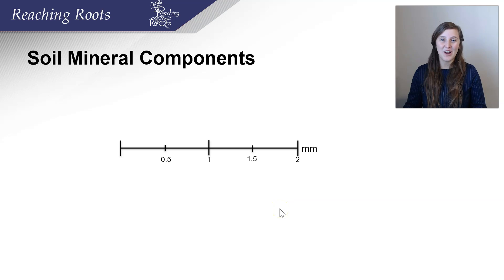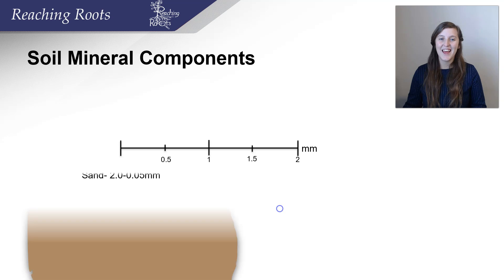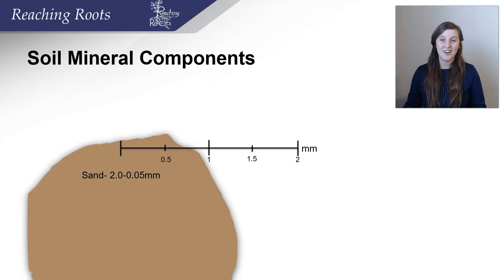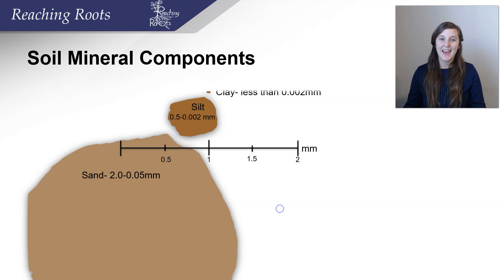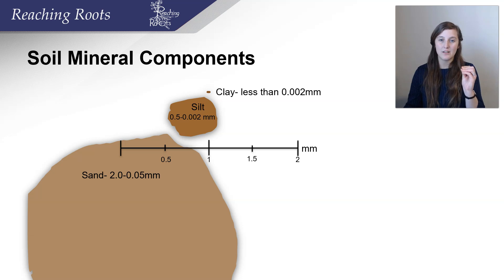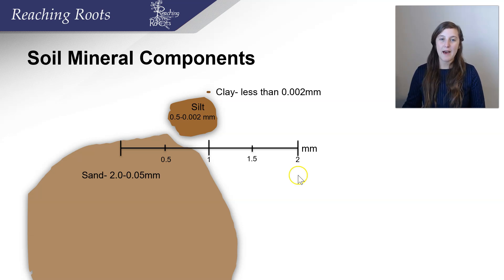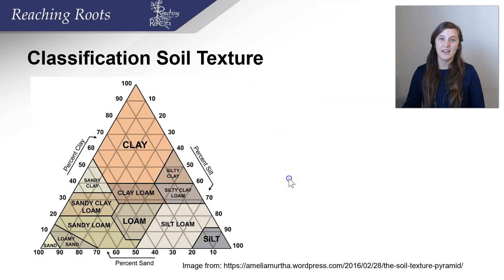Now let's see if you're correct about the size of sand, silt, and clay. If you said sand was the largest, you're correct — when you put sand in your fingers, it's very gritty and you can feel the large particles. Silt is much smaller and clay is tiny. That's why we use clay to build pots: the particles are so small they can stick together and form pottery. The amount of sand, silt, and clay in soil determines what type of soil it is.